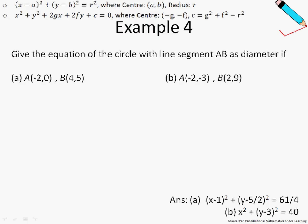In example number 4, we are asked to give the equation of a circle with line segment AB as diameter. What exactly is the question asking for? Let me give you a pictorial view on the question, so this will help you understand better.